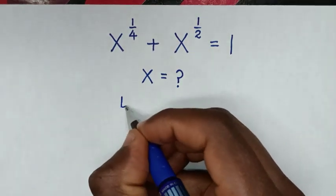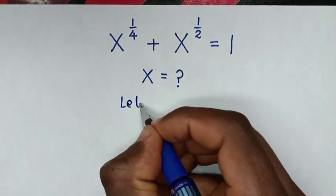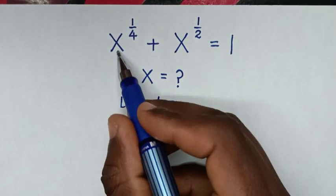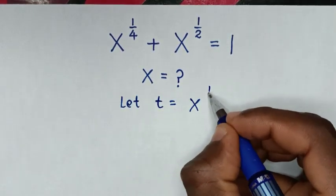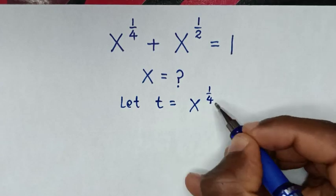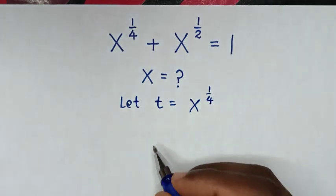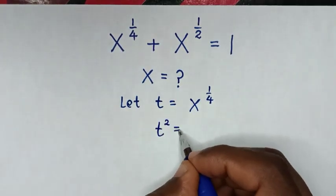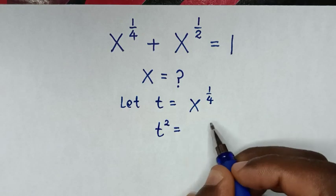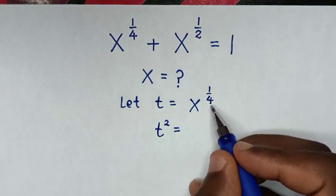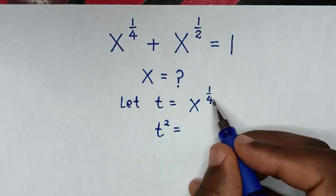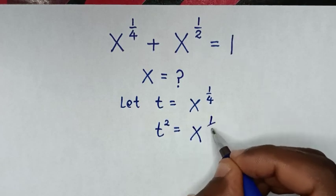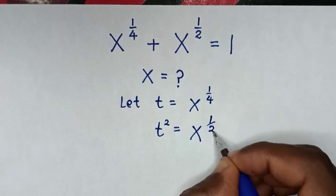In the first step, we let t equal to x to the power of 1/4. Then t squared will be equal to x to the power of 1/4 squared, which gives us x to the power of 1/2.